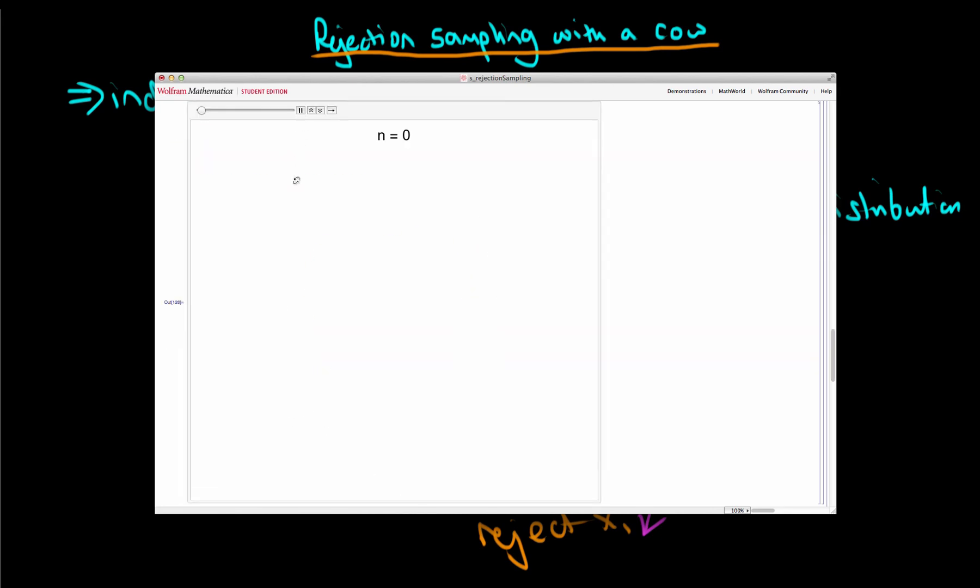So now illustrating this process in action. On the top here I've shown the total number of points that I've generated. Obviously we're rejecting quite a few of our points.